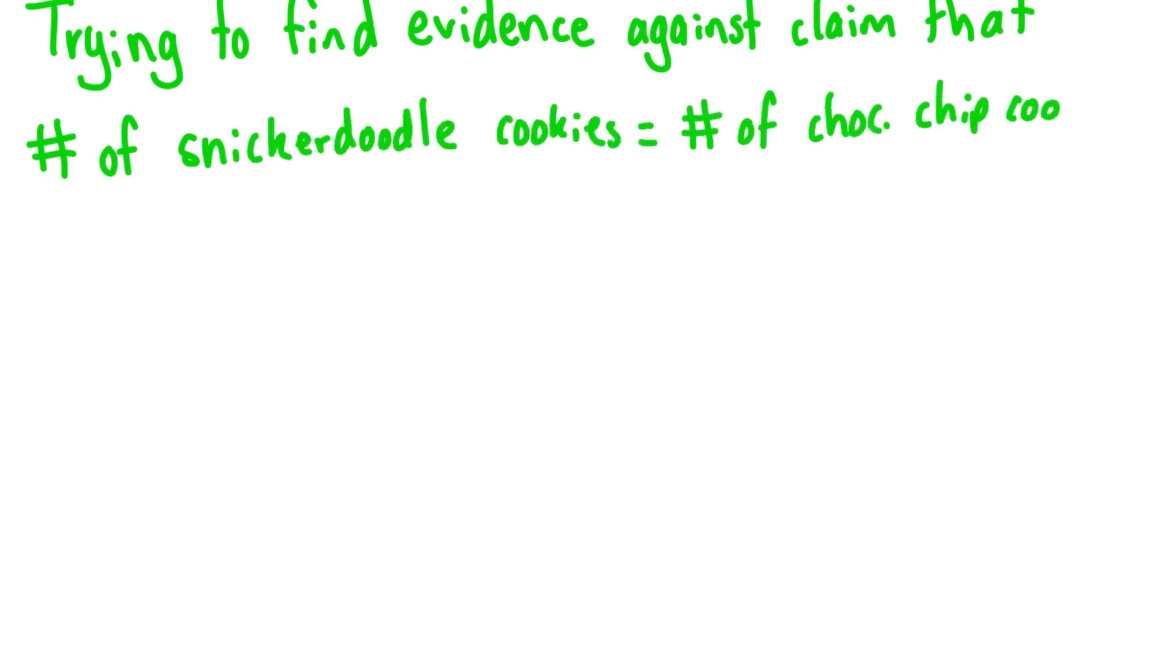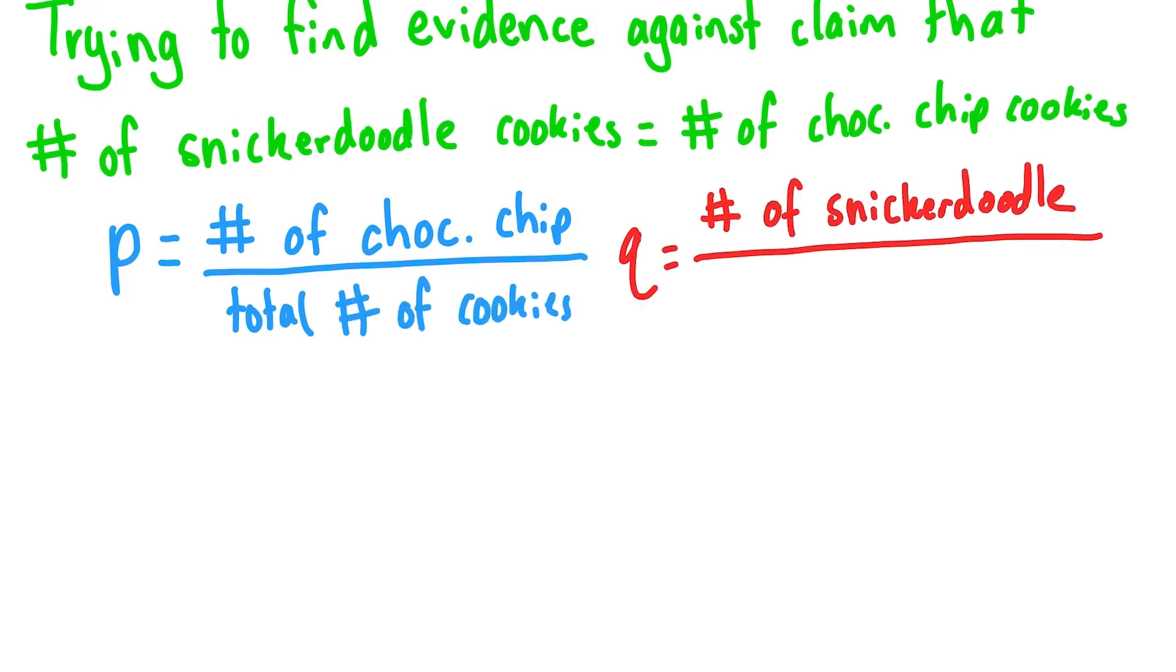Our null hypothesis will be that the number of each type of cookies is the same. If p represents the proportion of chocolate chip cookies in the bag, and q represents the proportion of snickerdoodle cookies in the bag, then our null hypothesis is that p equals 0.5.